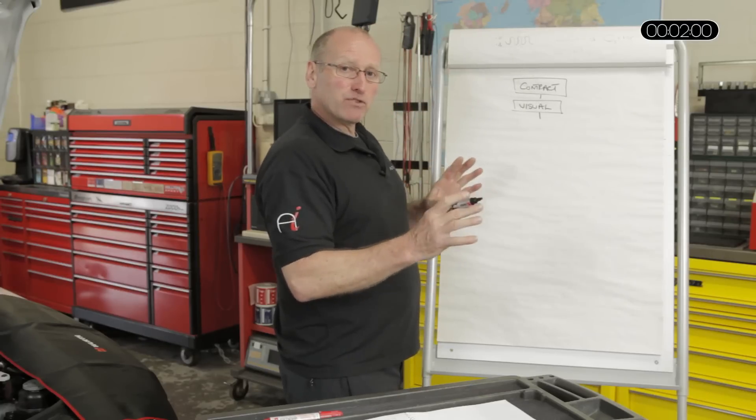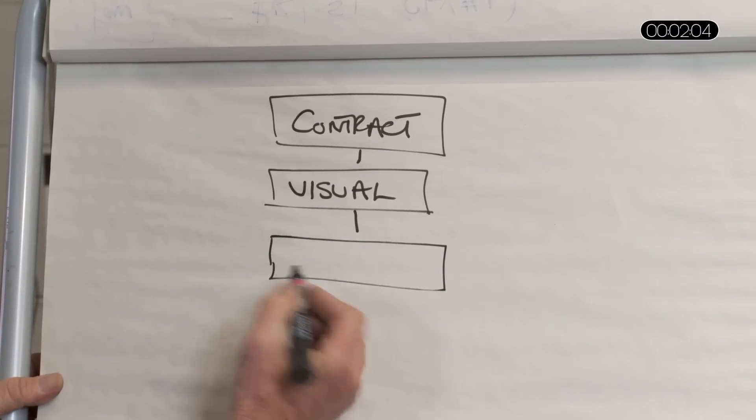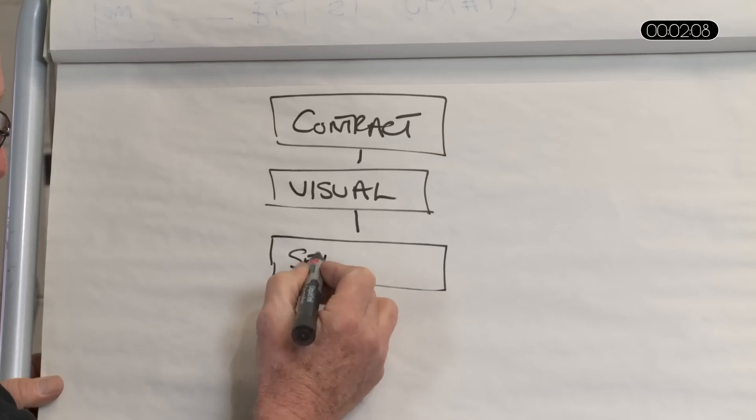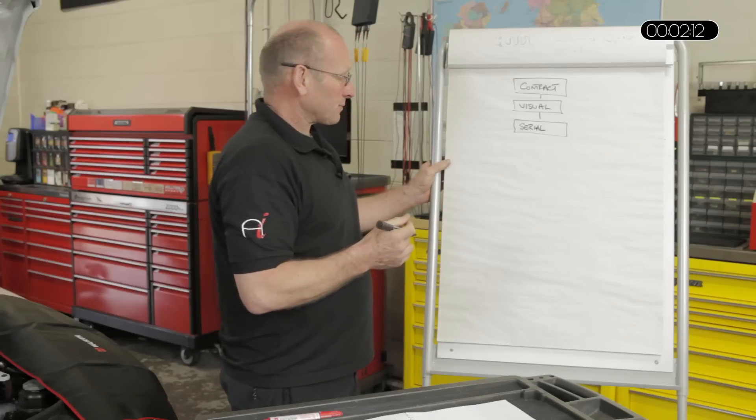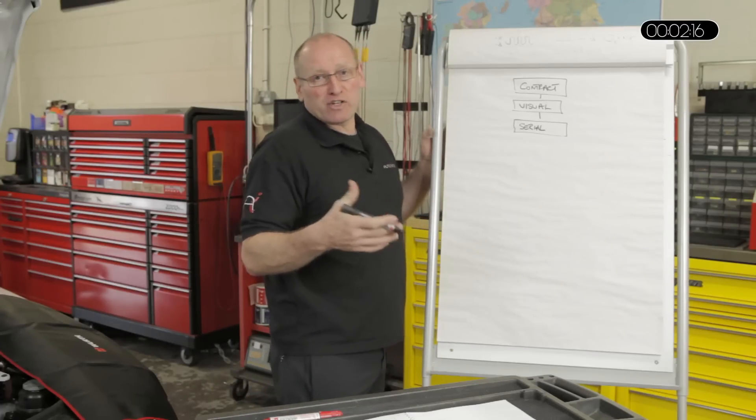You then effectively have a number of choices but the key first choice is what I call a global serial check. By global I mean bumper to bumper. Why should we look at the entire vehicle when perhaps we're concentrating on engine or transmission or braking?